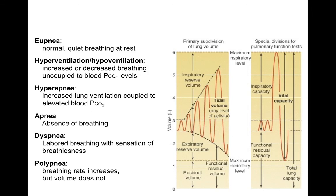Vital capacity is the difference between maximum inspiration and maximum expiration — the maximum breathing capacity in life. Total lung capacity is large and never really used functionally; it's an anatomical value. But these volumes are important for your homework and projects. I hope this was helpful — see you soon, take care.